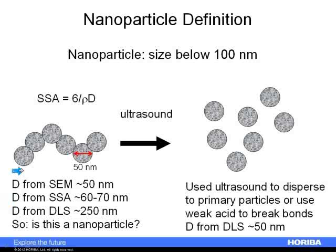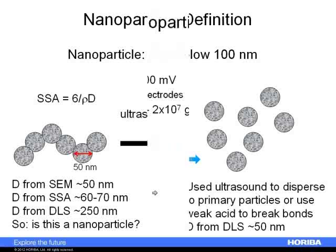But if we measure this aggregate as it exists in a dynamic light scattering instrument, we'd be asking: what sphere diameter would diffuse at the same rate as this particle? We'd probably say it's 250 nanometers — no longer a nanoparticle. But if we disperse it down to the individual particle state, we'd get back to saying we are measuring nanoparticles on the scale of 50 nanometers. So nanoparticle or colloid — in this case we can use either word.